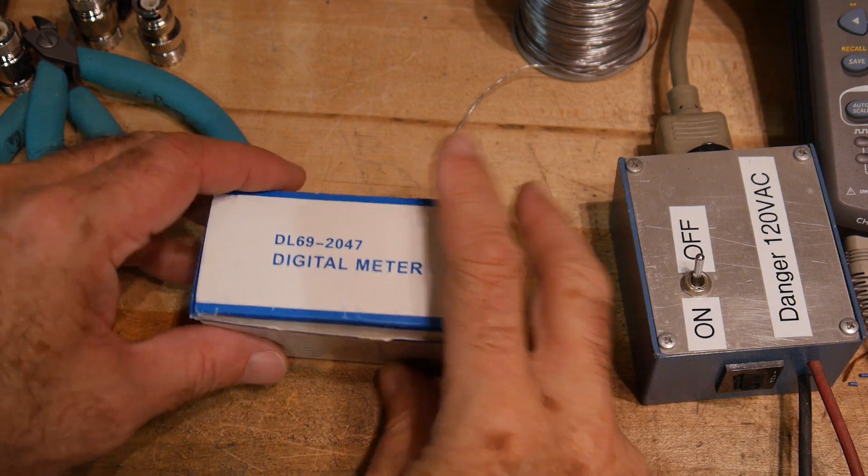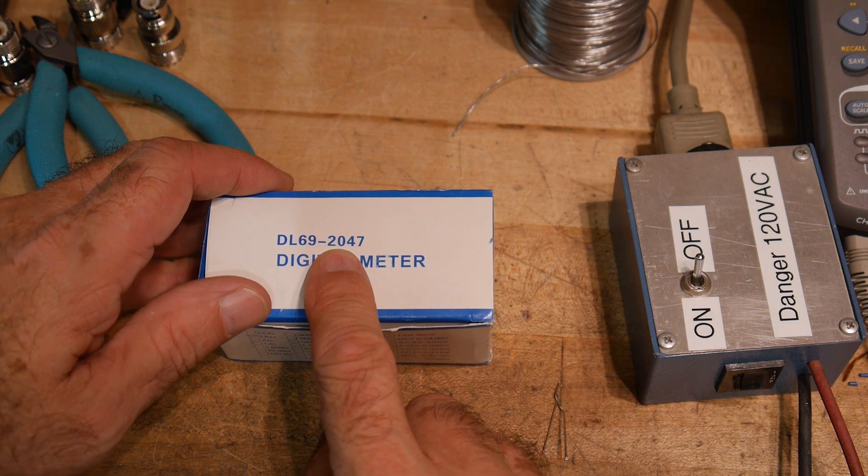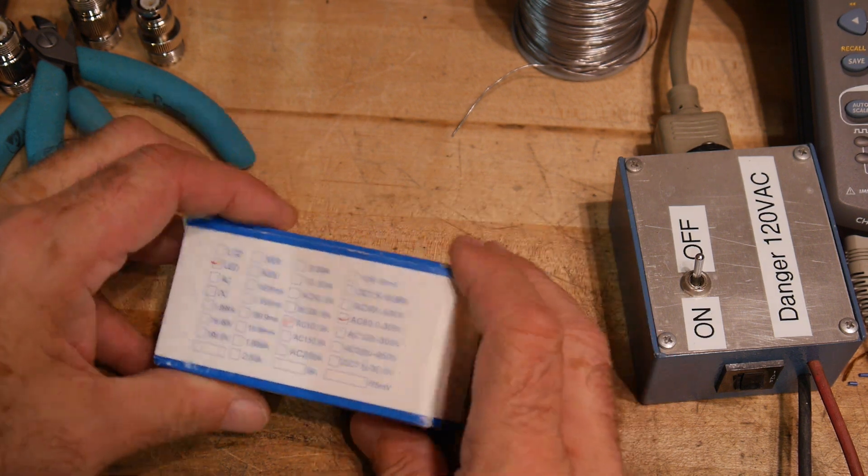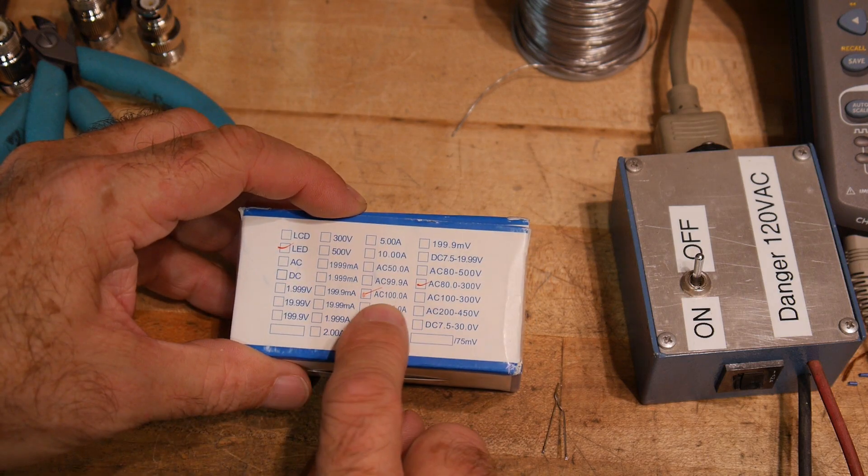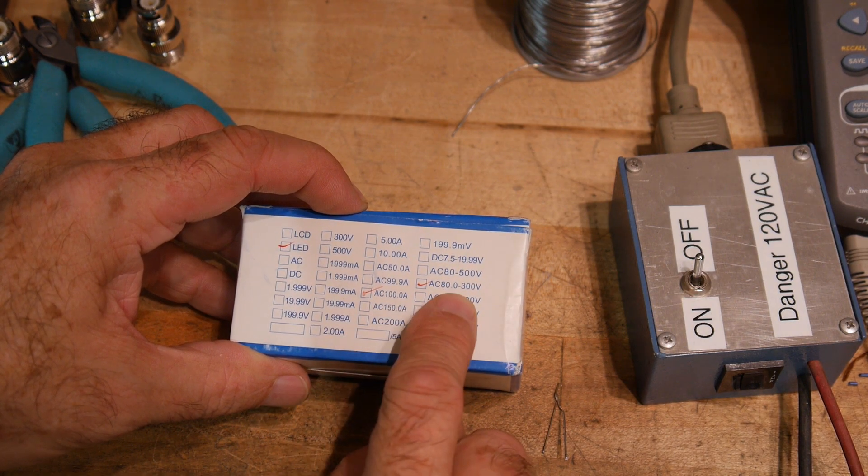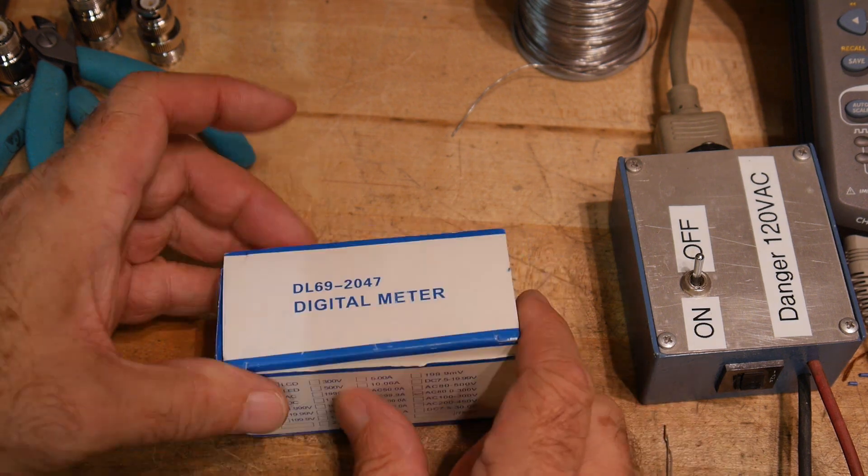So what do I have? A digital meter, a DL69-2047 and it's an LED meter, 100 amps, 80 to 300 volts AC. So what does that mean?